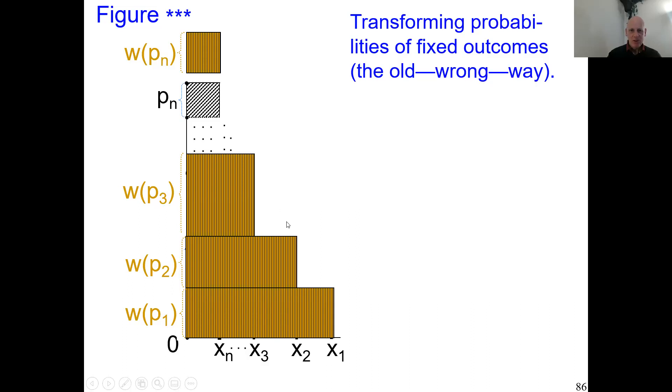They don't transform distances from points all the way down to the axis, but distances from points to their lower neighbors. That's what the old formula of the psychologists did. The brown area is now the value of the lottery according to the psychologists.